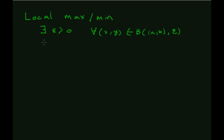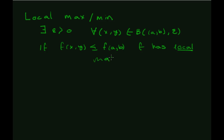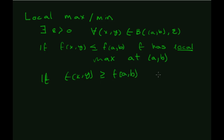By constructing this as an epsilon ball, we can visualize this in multiple dimensions. If f(x, y) is less than or equal to f(a, b) for everything in the epsilon ball, we say f has a local max at (a, b). If f(x, y) is greater than or equal to f(a, b), then f has a local min at (a, b).